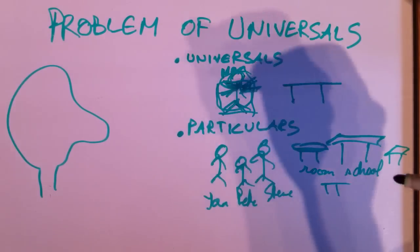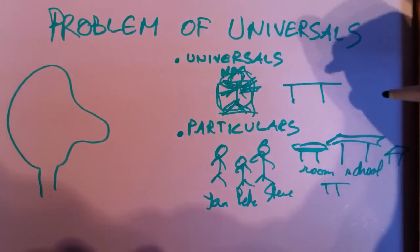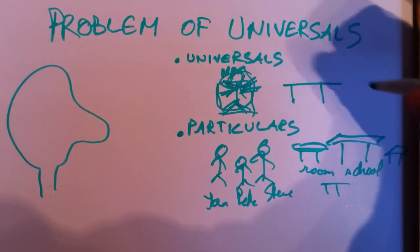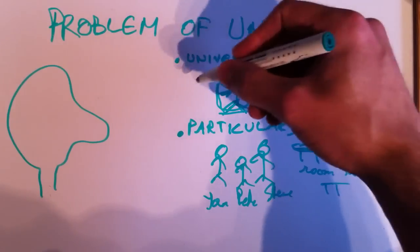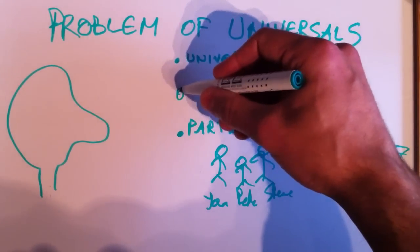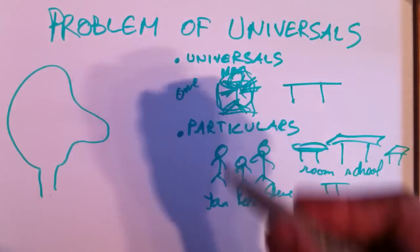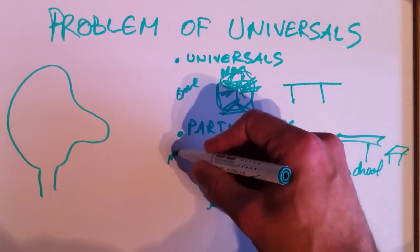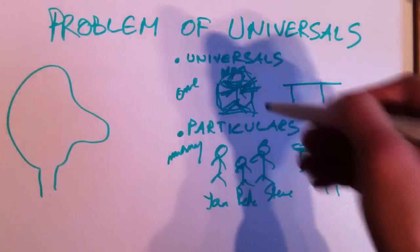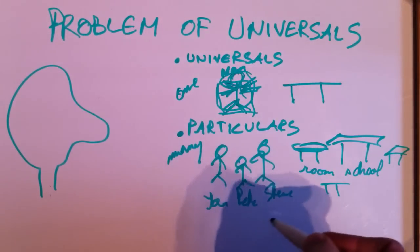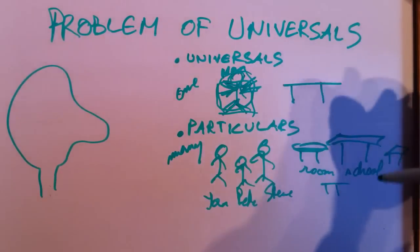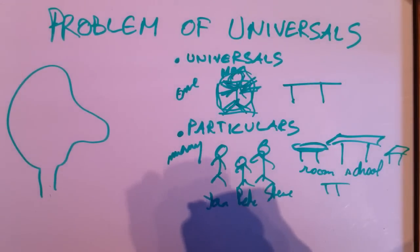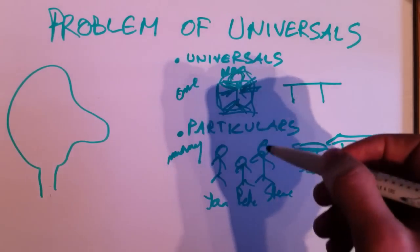And we could point out some characteristics of universals versus particulars. For instance, there's only one man, there's only one universal man, while there are many particular instances of men. There's Jan, there's Pete, there's Steve, many particular instances of tables.